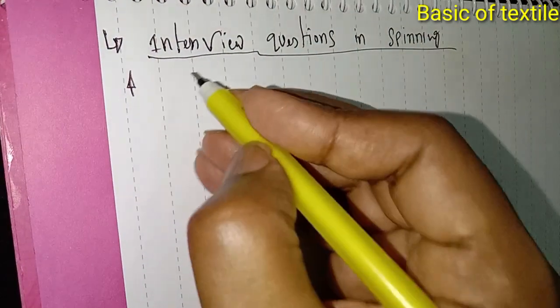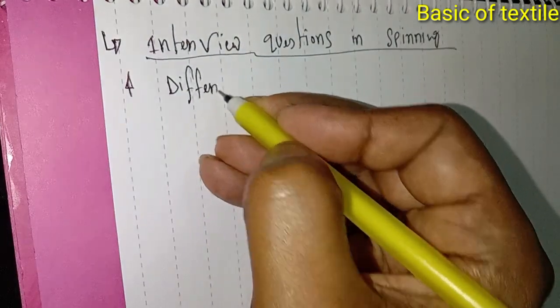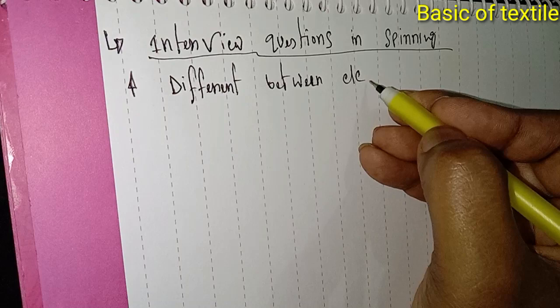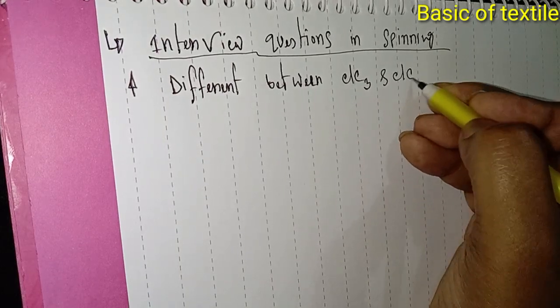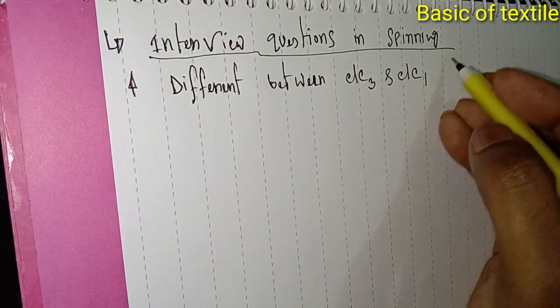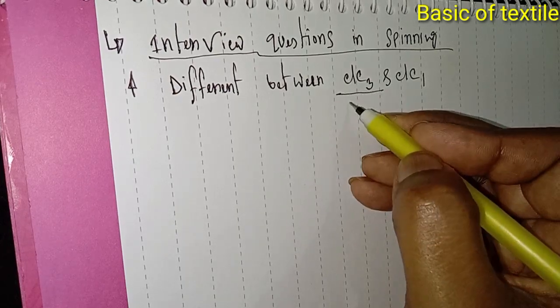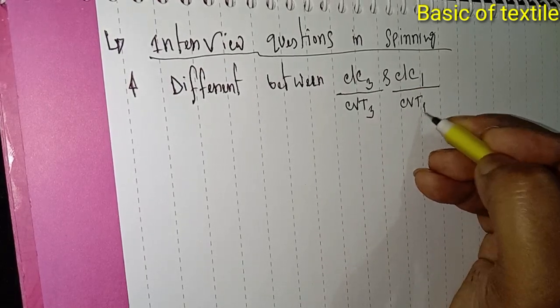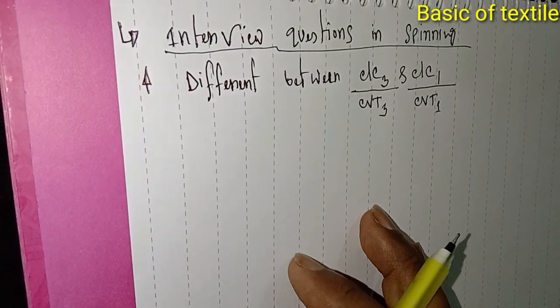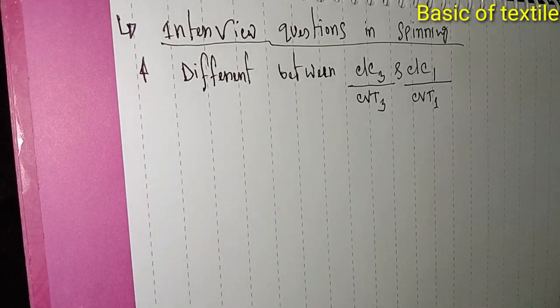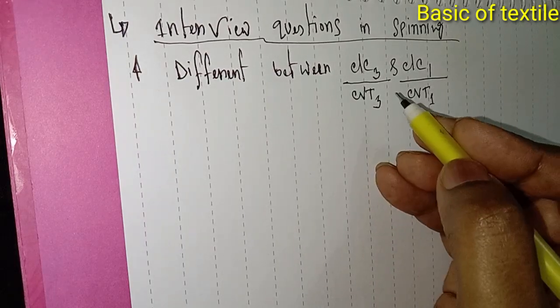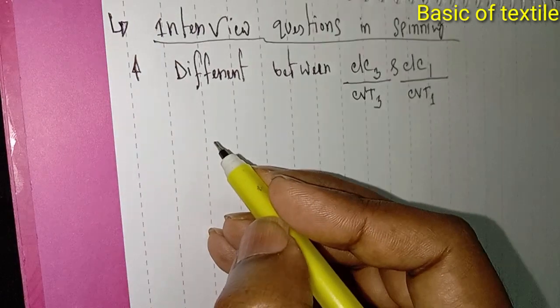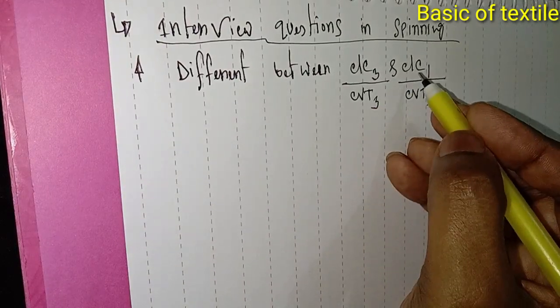Number one: What is the difference between CLC3 and CLC1? When we compare CLC3 or CBT3 with CLC1 or CBT1, there are differences in the machine setup and operations. The blow room machine uses CLC3 and CBT3 tags, while different parameters apply to CLC1 and CBT1.